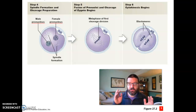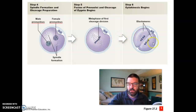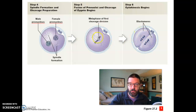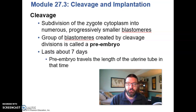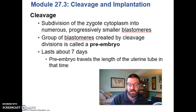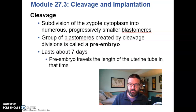You're essentially taking this cell and cleaving it, chopping it in two, so you end up from one cell getting two, as you do in mitosis. But these two cells are half the size of that one original cell — hence the idea of cleavage — and these two new cells are called blastomeres. At this point, as that first zygote is being cleaved into smaller blastomeres during cleavage, this is not even considered an embryo yet; this is a pre-embryo. It takes about a week for that pre-embryo to travel the length of the uterine tube and eventually implant itself in the endometrium of the uterus.